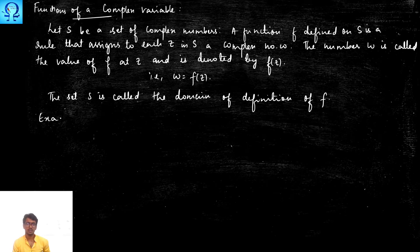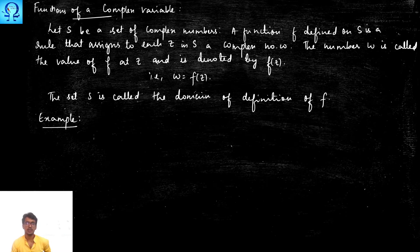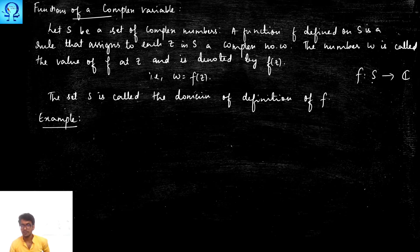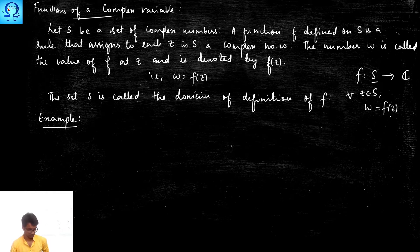The number w is called the value of f at z, and is denoted as f(z). We may simply write w = f(z). The set S is called the domain of definition of the function f. This is the same as the definition of a function we have seen in real analysis. For every element z in S, we associate a unique complex number f(z) in C.